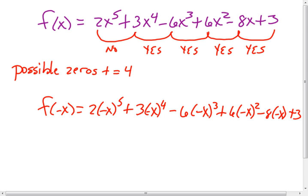So we're going to rewrite all these. The basic way to do this, or the easy way to remember, is every time you have an odd exponent, the sign is going to change.